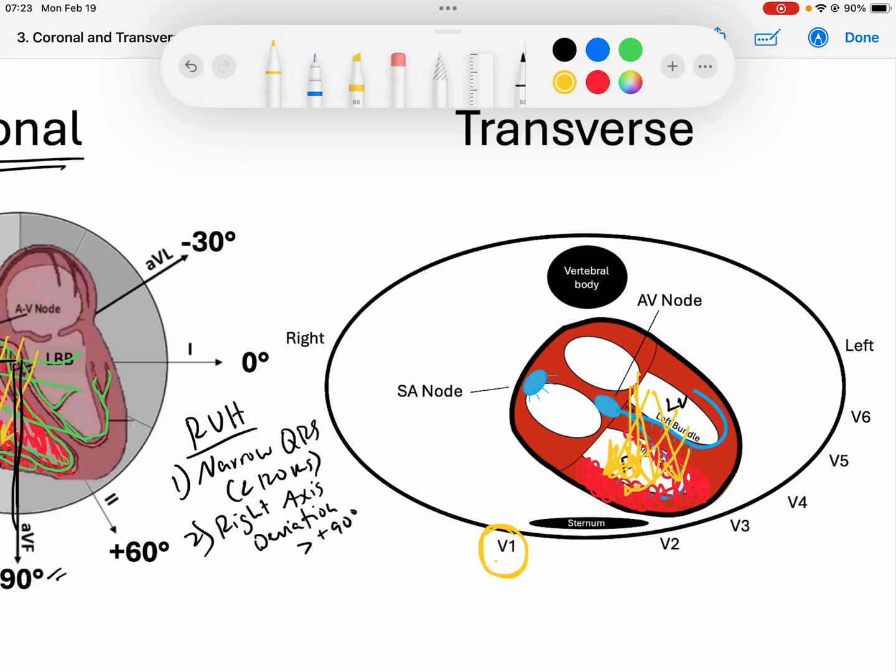When those forces turn into the right ventricle, we really see those in V1. V1 will have a significantly positive QRS complex. That's usually not the case because the usual vector of depolarization is away from that towards the left ventricle. But in this case, my right ventricle is hypertrophied, so we will have a tall R wave. That R wave will be greater than 7 millimeters.